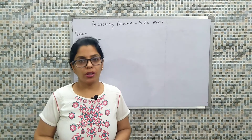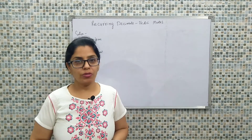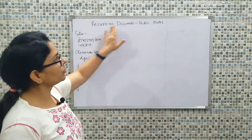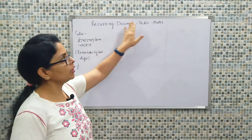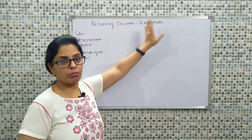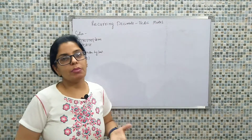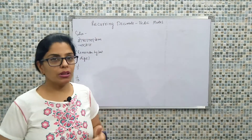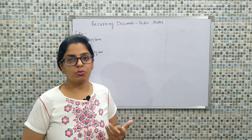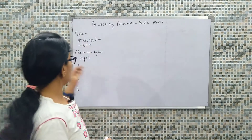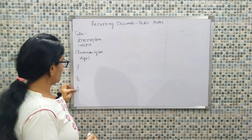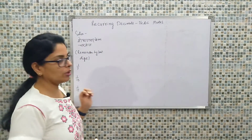Hello viewers. In today's session we would be looking into the concept of recurring decimal using the concept of Vedic Math. Before, we took some examples of recurring decimal — division by 7, division by 13, division by 17.